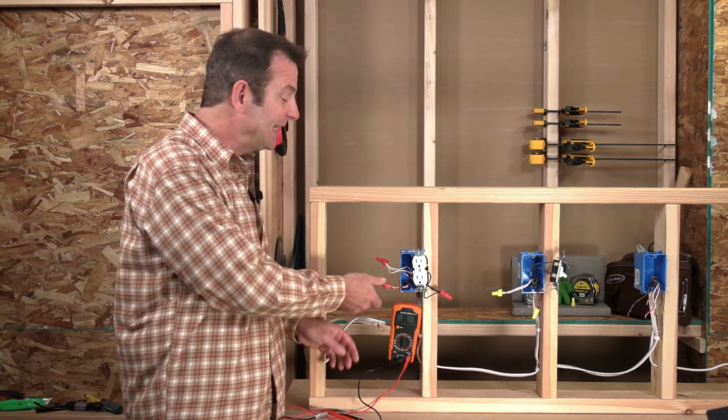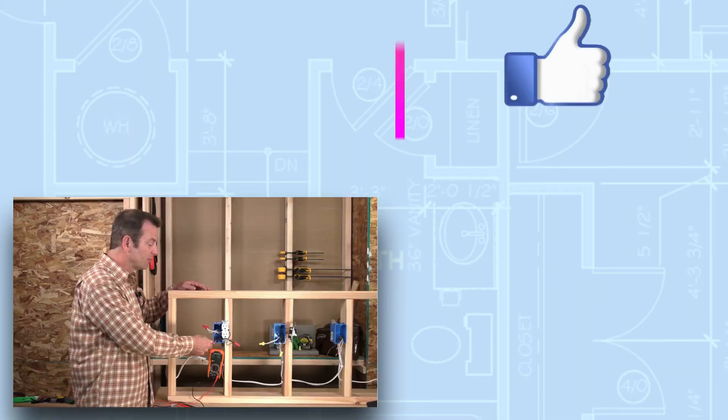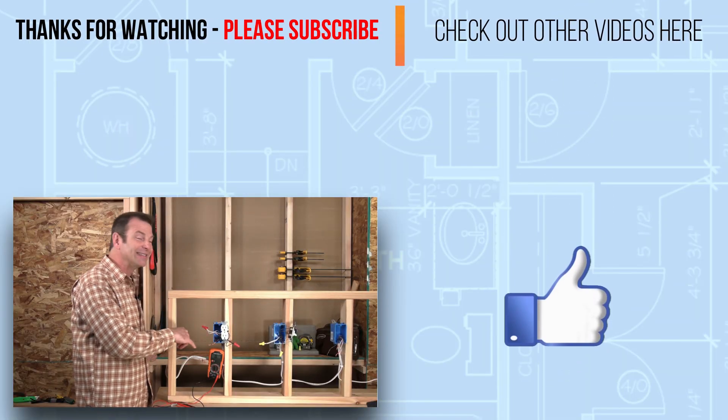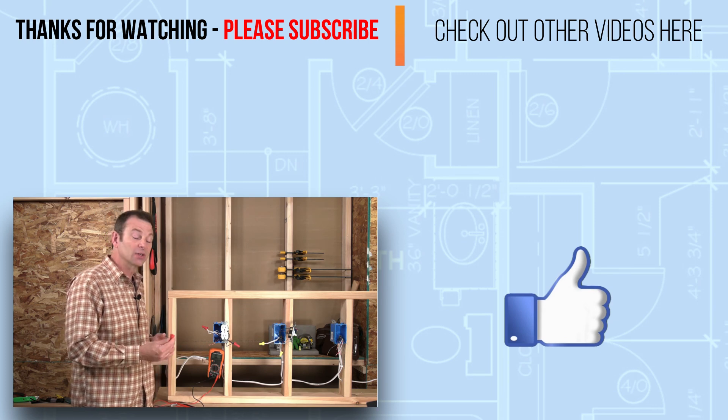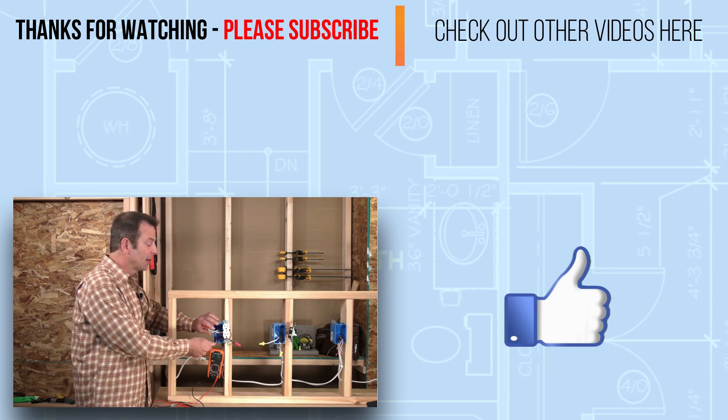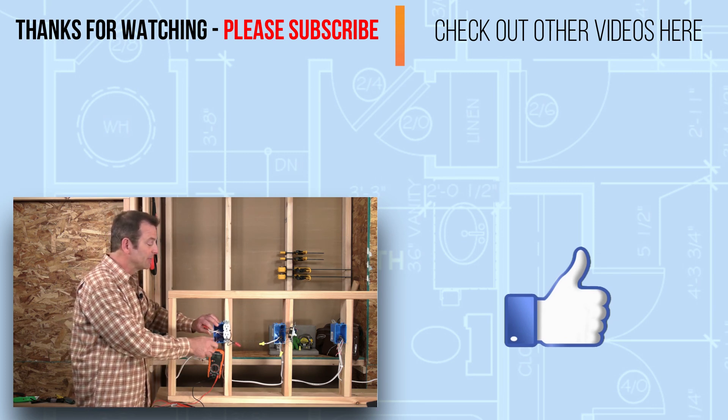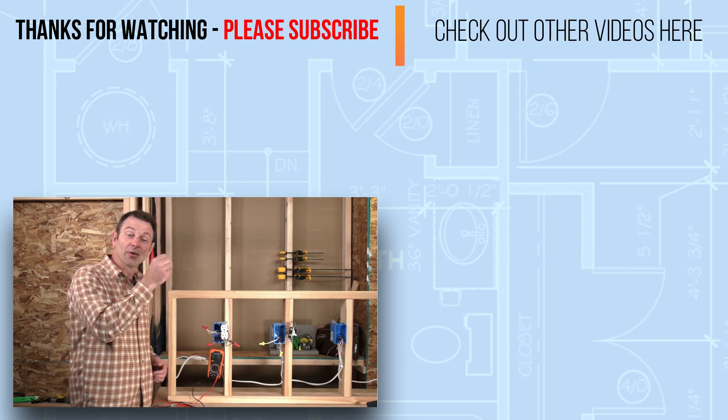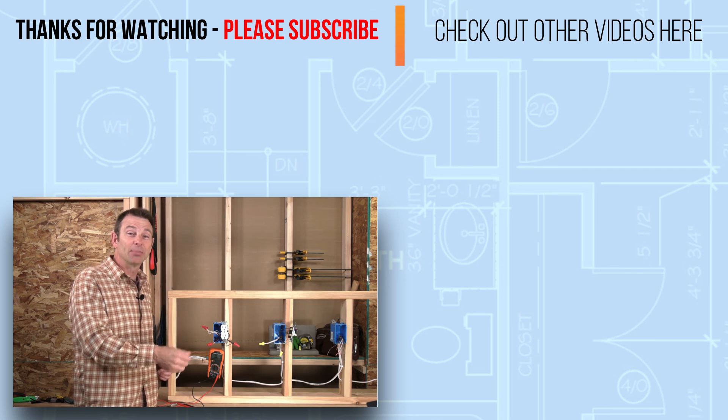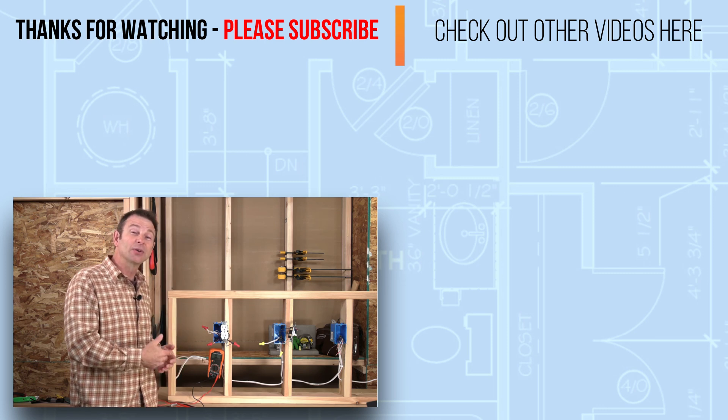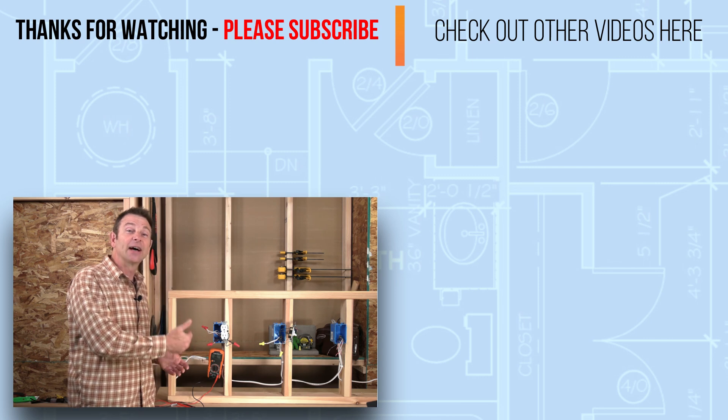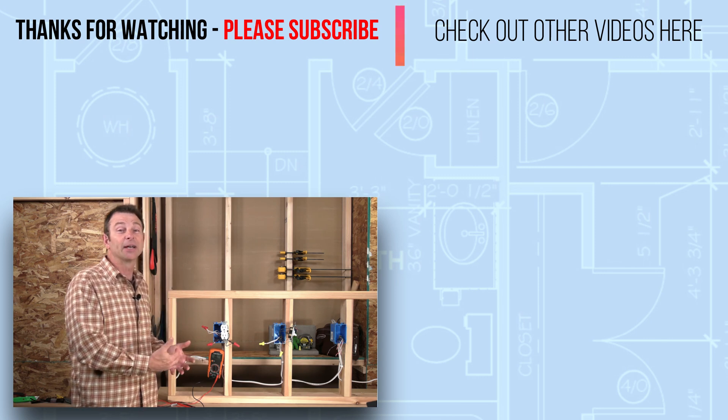Sometimes you might even need to investigate to the point where you have to undo a wire nut and check to make sure that all of your conductors are making contact in there. But the purpose of the multimeter is to help you hone in or focus in on exactly where that problem is. So at the point that you get an OL or a bad reading, you have identified the source of your problem. So stop there and evaluate.